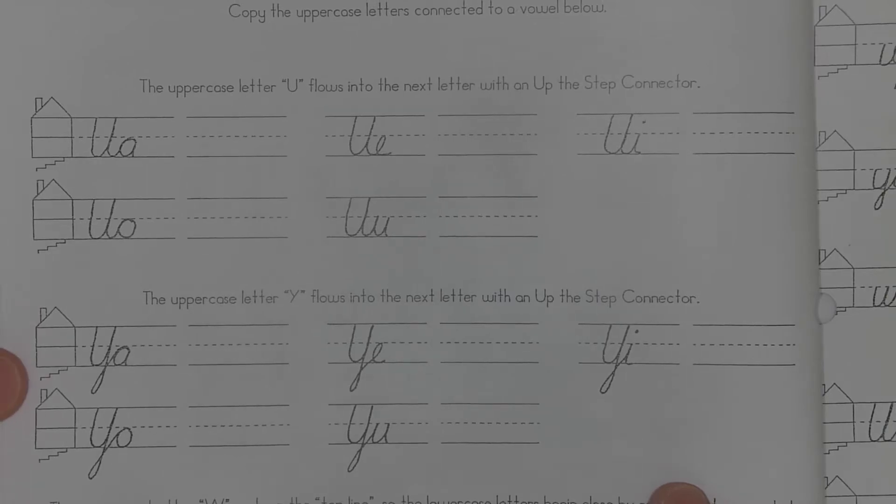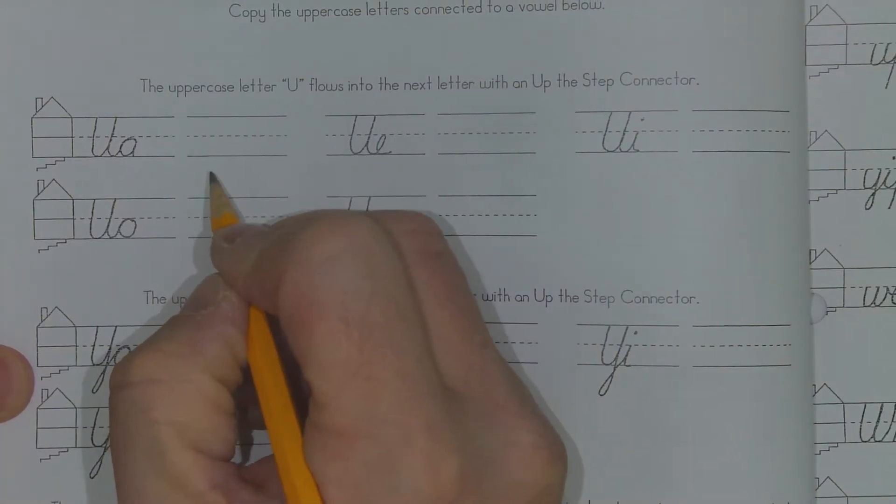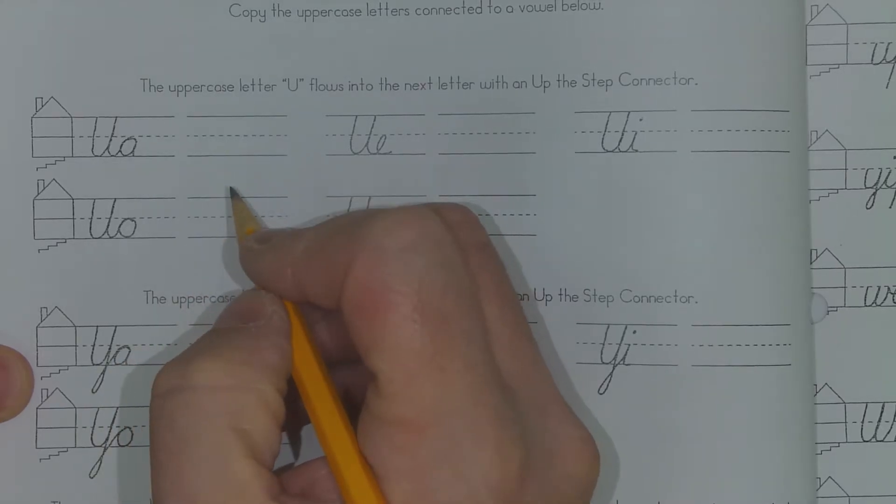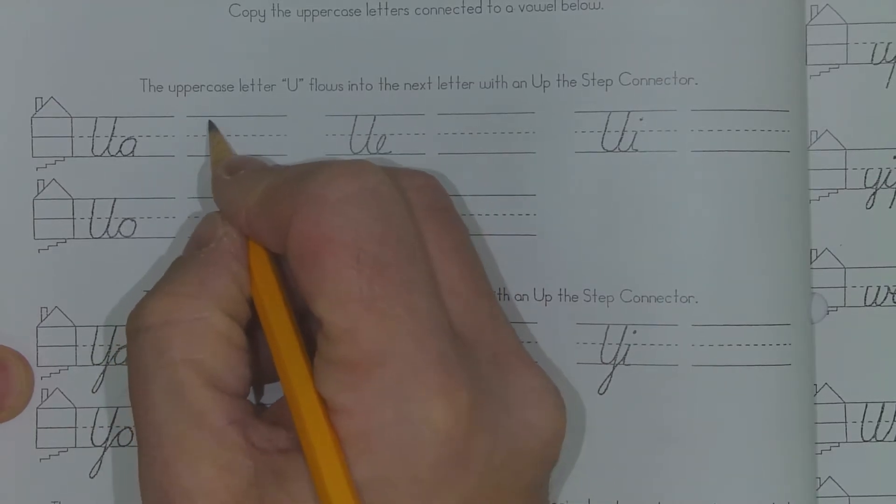So by now you should be getting pretty good at U-turns. You should be getting pretty good at cursive in general. It's going to take some practice, so don't worry too much if it's a little bit off, but you should be getting more comfortable with it at least.